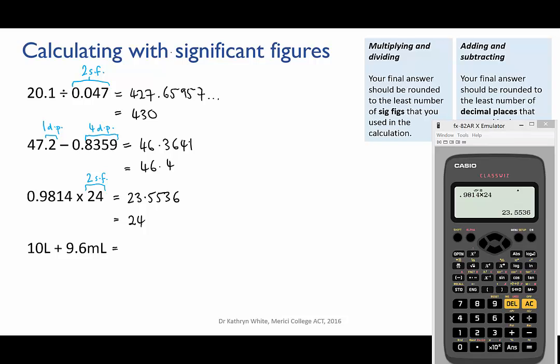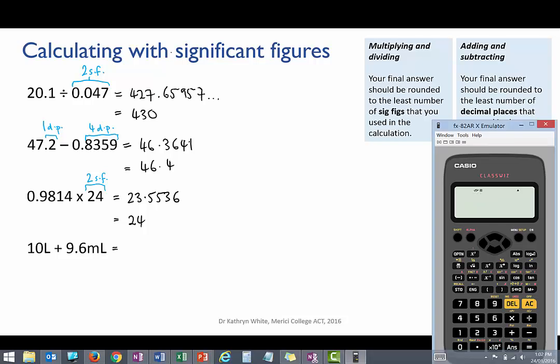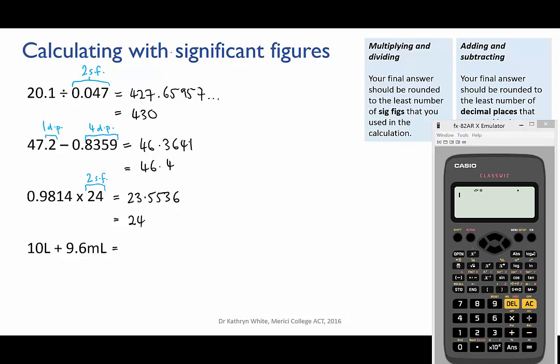Lastly we've got 10 litres plus 9.6 millilitres. Think about a full 10 litre bucket and a 10 mil measuring cylinder with 9.6 mils of water in it. Well we can't just add 10 litres to 9.6 mils. Why not? Well the units are different.